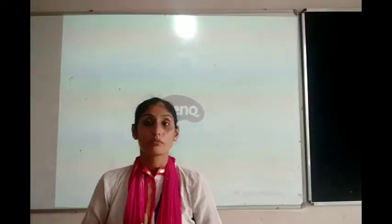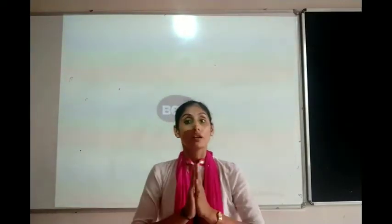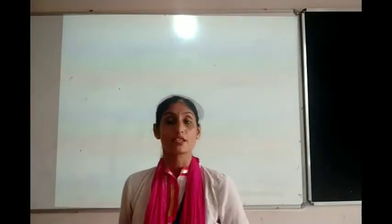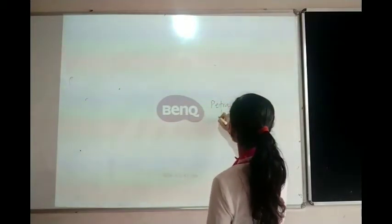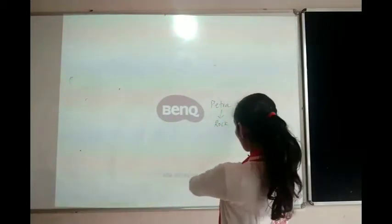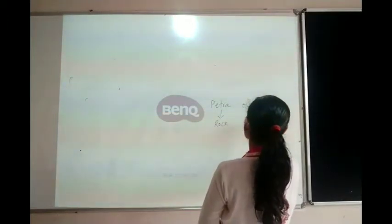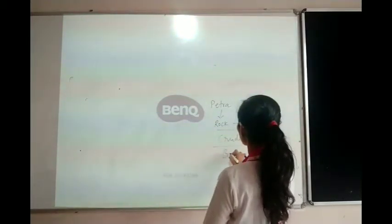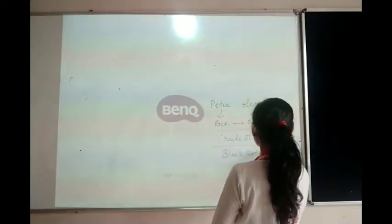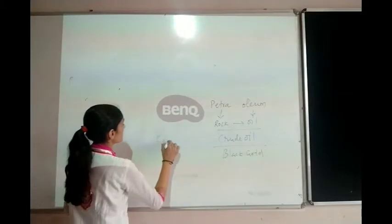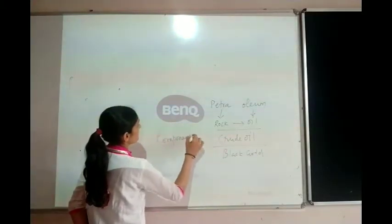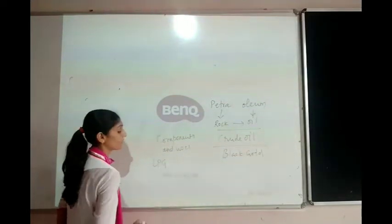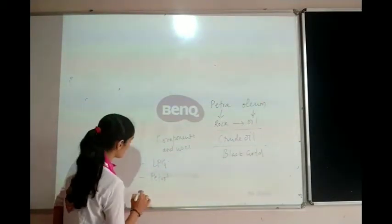Good morning children. In the last lecture we learned about the second fossil fuel, petroleum. Petroleum is made of two words: petra and oleum. Petra means rock and oleum means oil, so it is known as rock oil, fluid oil, or black oil. We learned about the components of petroleum and their uses, including LPG, which is liquefied petroleum gas, petrol, and kerosene.